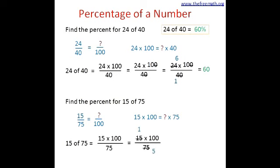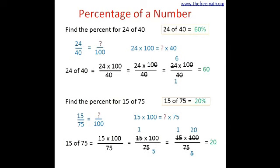15 ones are 15, and 15 fives are 75. We know that 100 is divisible by 5: 25 fives are 100. So the calculation gives 20 multiplied by 1, which equals 20. That means 15 of 75 is equal to 20%, or 15 out of 75 is equivalent to 20 out of 100. And 20 out of 100 is 20%.